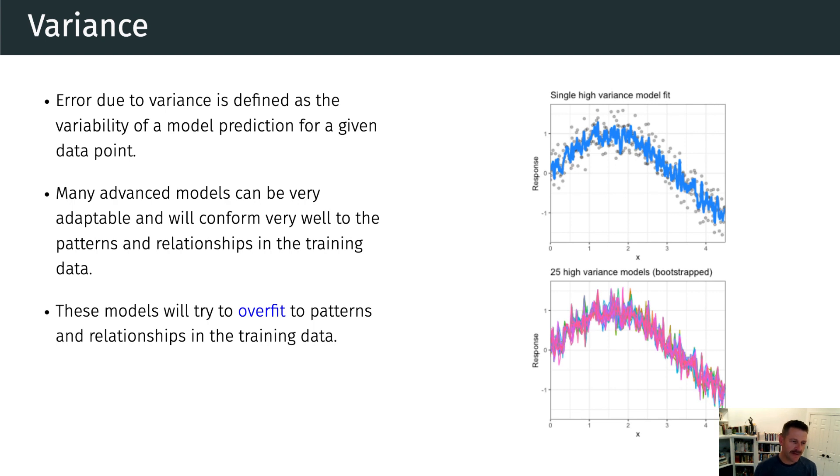All right, so we can think of models with high variance. They can be very adaptable and conform to these underlying patterns. However, they tend to overfit to the training data. And that's the major problem with high variable model or models that produce high variance in the errors.